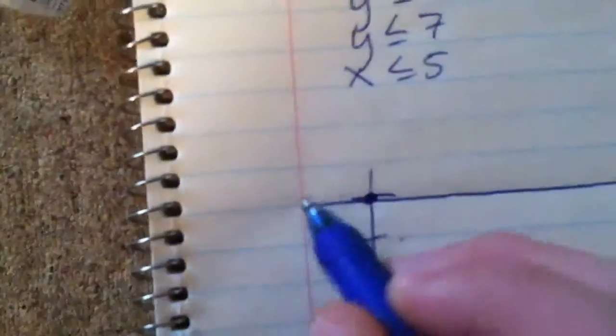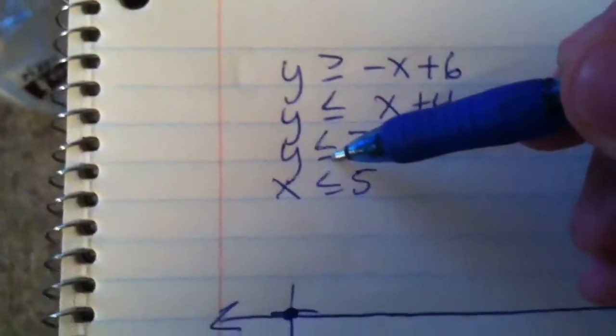2, 3, 4, 5, 6, 7 at the top here. This is not going to be very good. And that's a solid line because it has the line underneath the inequality.